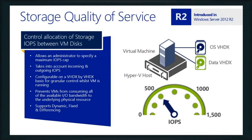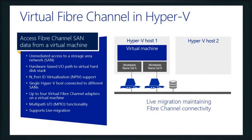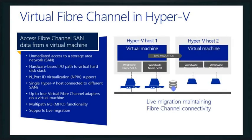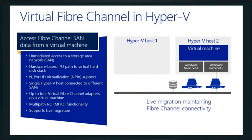Virtual fiber channel — this is something we put into R2. Being able to use virtual fiber channel from our host is important, but more importantly, how do I use virtual fiber channel inside of my virtual machine so my virtual guests can actually access it? We support N-Port Virtualization ID, we can do up to four virtual fiber channel adapters, and we have multi-path I/O functionality. This is actually talking about our guests accessing that storage directly, and it's supported across live migration.